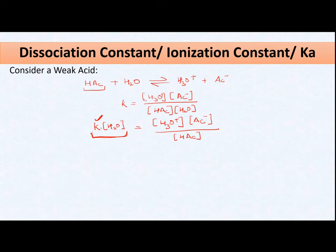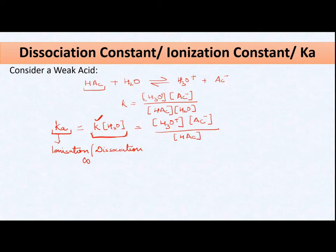This product will be a constant. K is already constant. If I am considering a very dilute solution, the concentration of water will not change with time, so multiplication of these two constants gives us another constant, which is Ka. This Ka is basically your ionization or dissociation constant.